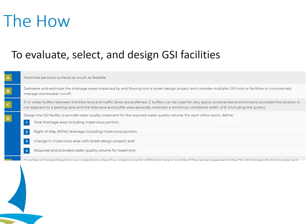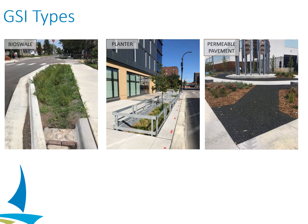There's also a helpful section on recommendations and adjustments to be made depending on any site suitability issues, including space constraints or soil amendments, and when to consider using those. To make things simple, we defined three main GSI types: a bioswale, which is bioretention with vegetated sloped sides; a planter, which is bioretention with vertical hard edges like the planters we see in the middle; and then permeable pavement.